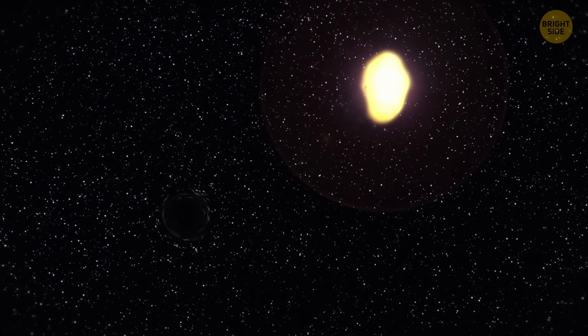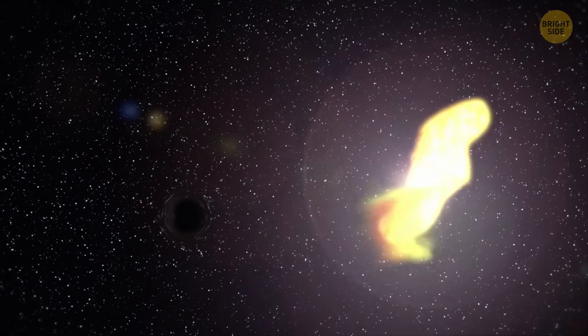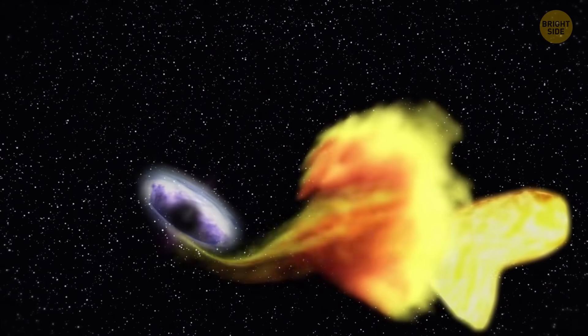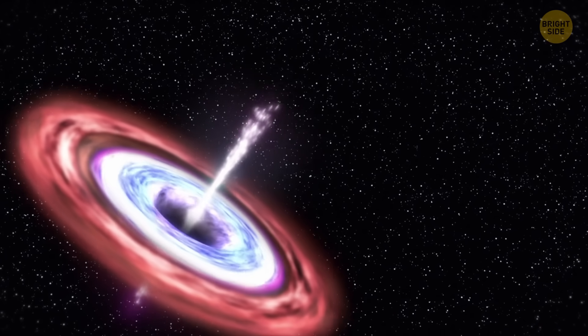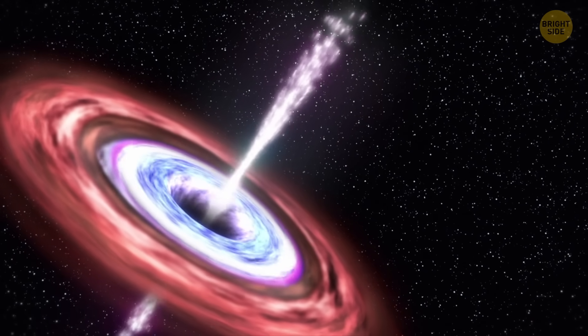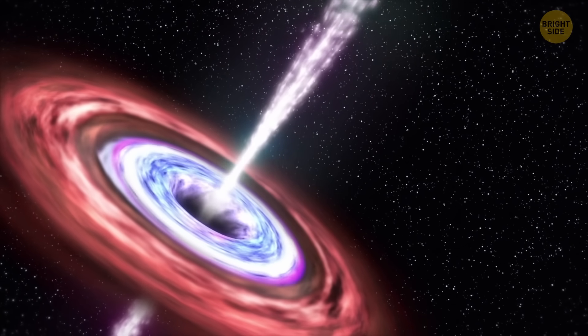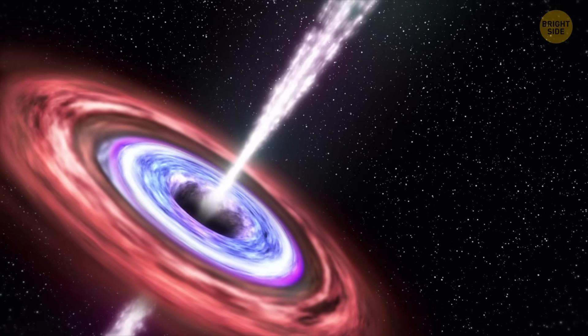In some rare cases, tidal disruption events create huge jets of material that shoot out from the black hole's poles. If these jets happen to point directly at Earth, we can see the signature of the event. It often looks like an intermediate-mass black hole eating a white dwarf star.